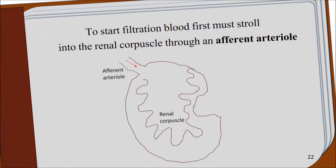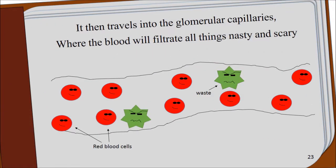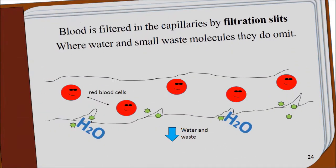To start filtration, blood first must stroll into the renal corpuscle through an afferent arteriole. It then travels into the glomerular capillaries, where the blood will filtrate all things nasty and scary. Blood is filtered in the capillaries by filtration slits, where water and small waste molecules they do emit.